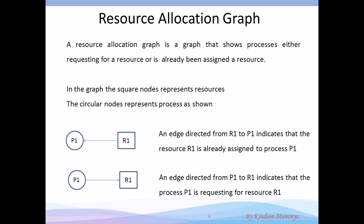Let's model resource allocation. Resource allocation is modeled using a Resource Allocation Graph, or RAG — a graph that shows processes either requesting for a resource or already holding a resource. The nodes can be round or square. If it is round, it means it is a process. If it is square, it means it is a resource.